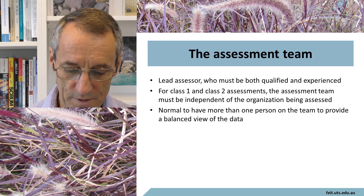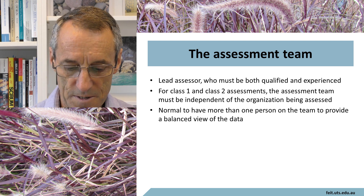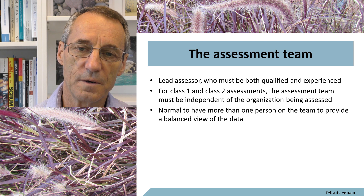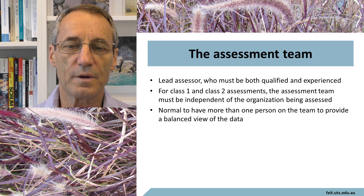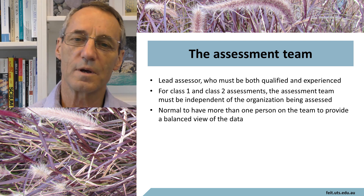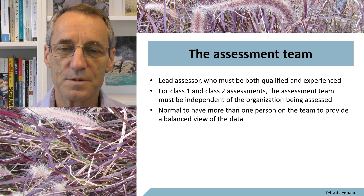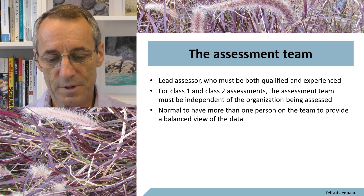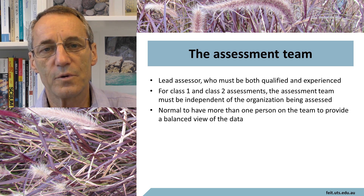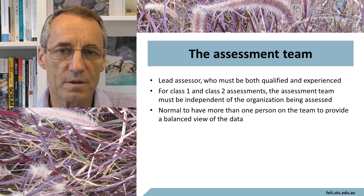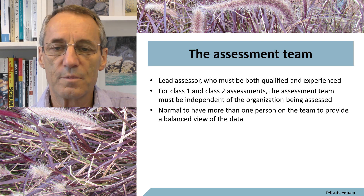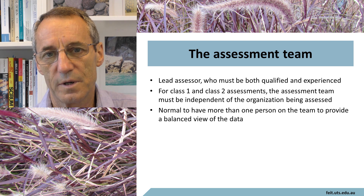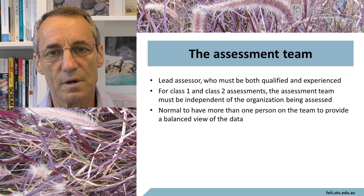There is always a lead assessor on the assessment team. For a class one assessment, the lead assessor must be both qualified and experienced. For class one and two assessments, the assessment team must be independent of the organization being assessed — it is necessary arm's length independence. It's normal to have more than one person on the team to provide a balanced view of the data, and this is where avoiding observation bias comes in.